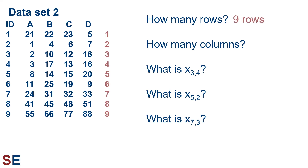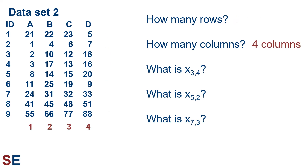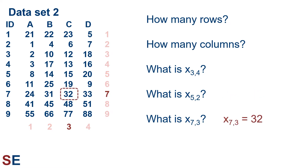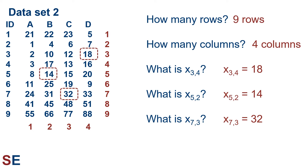Rows are horizontal sets of numbers — we have nine rows. Columns are vertical sets — we have four columns. x₃₄ is the value in the third row and fourth column: that's 18. x₅₂ is the fifth row, second column: that's 14. x₇₃ is the seventh row, third column: that's 32. So we have a data table that's nine rows tall and four columns wide.